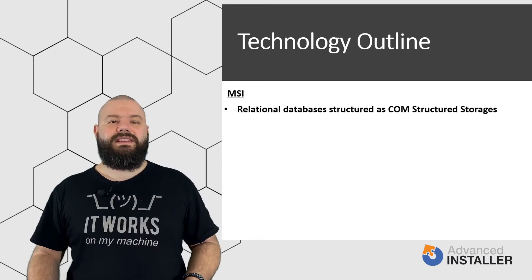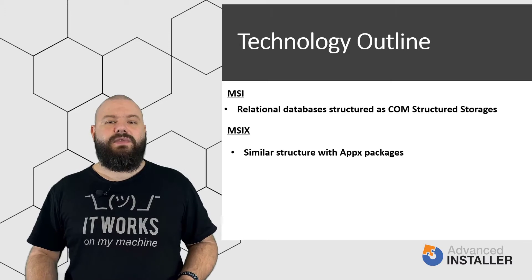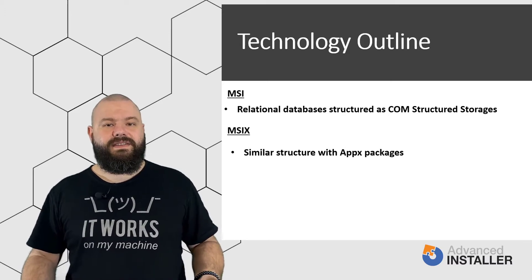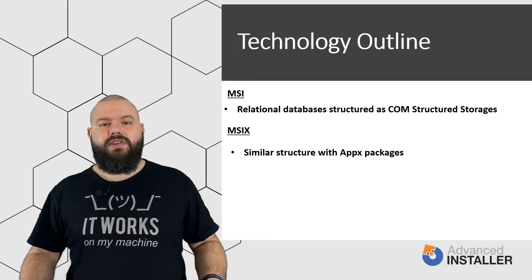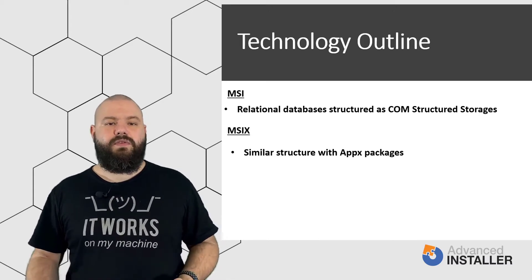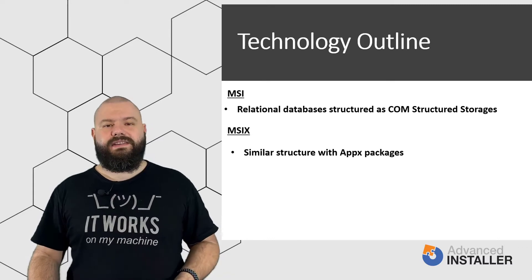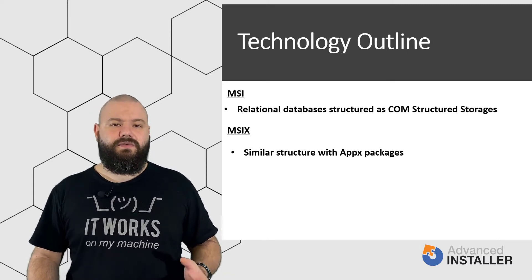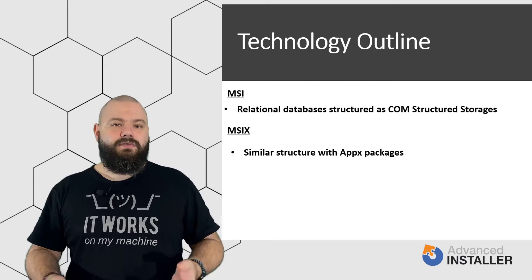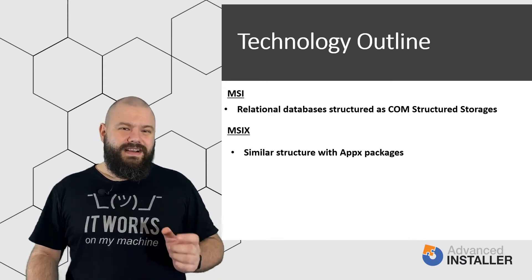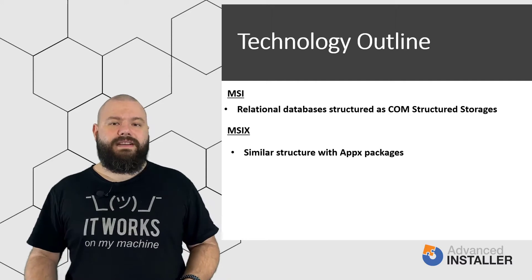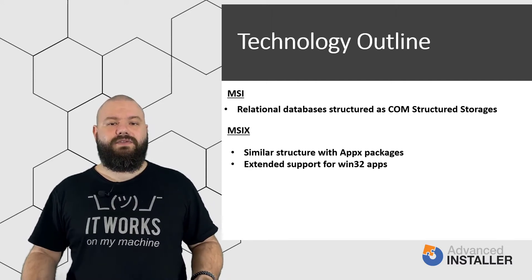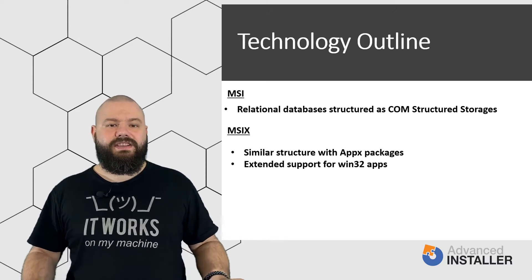MSIX was presented as an improved version of the Appx packages, which were initially used only for universal apps. This technology is meant to better support traditional desktop applications on Windows 10 and brings along knowledge from MSI, AppV packages and the desktop bridge program. An MSIX package is very similar to an Appx package structure-wise — it's basically a zip package that contains all the files, folders and registries necessary for the application, but also some configuration XML files. The main difference MSIX brought compared to Appx is its extended support for Win32 applications, the standard desktop applications we still use today.